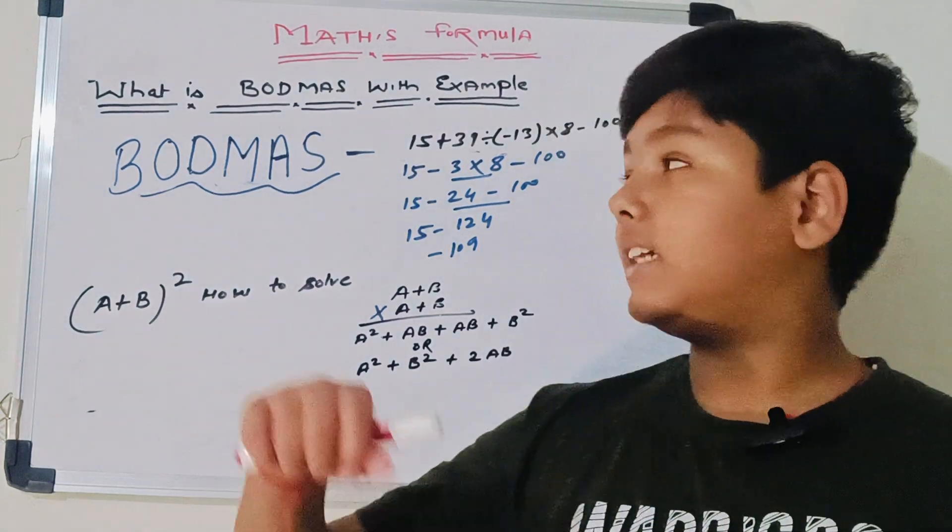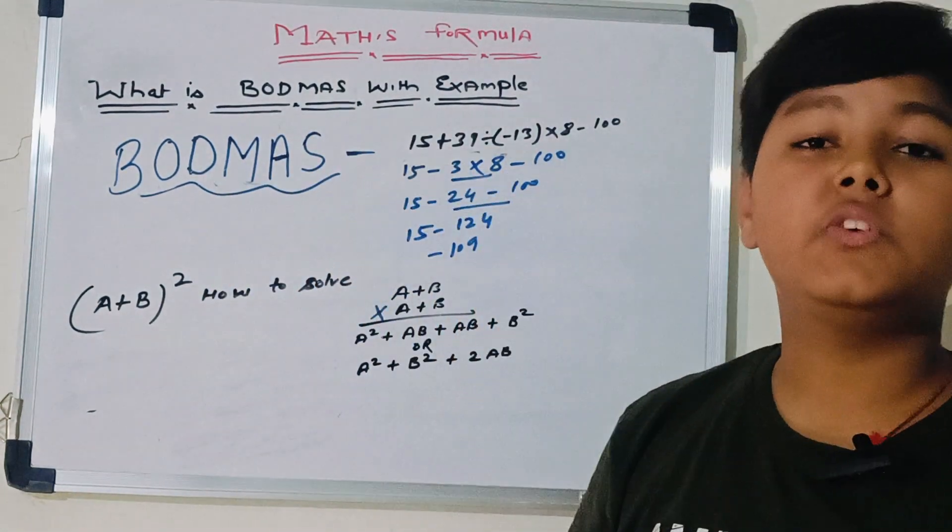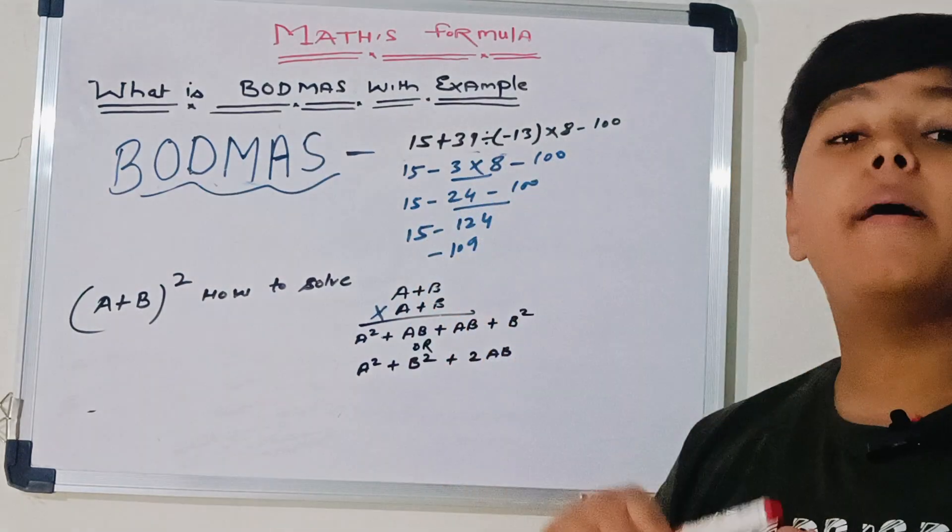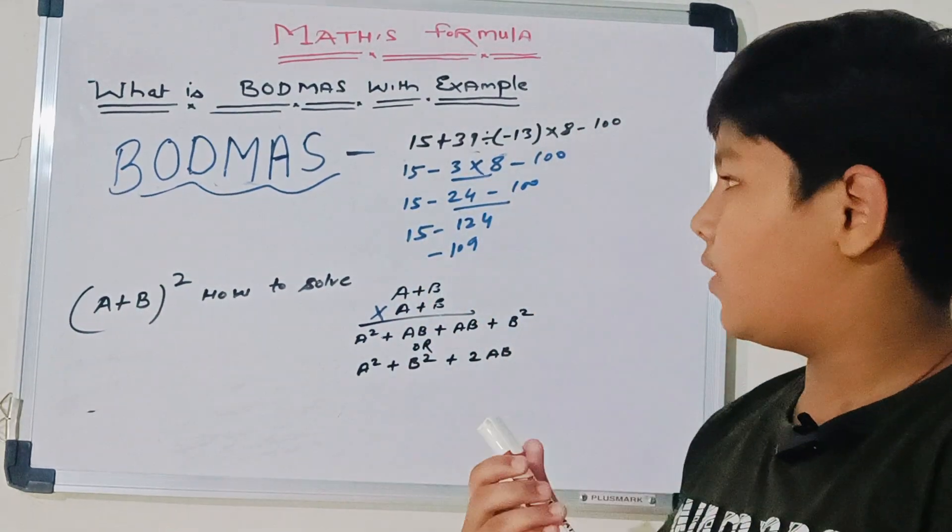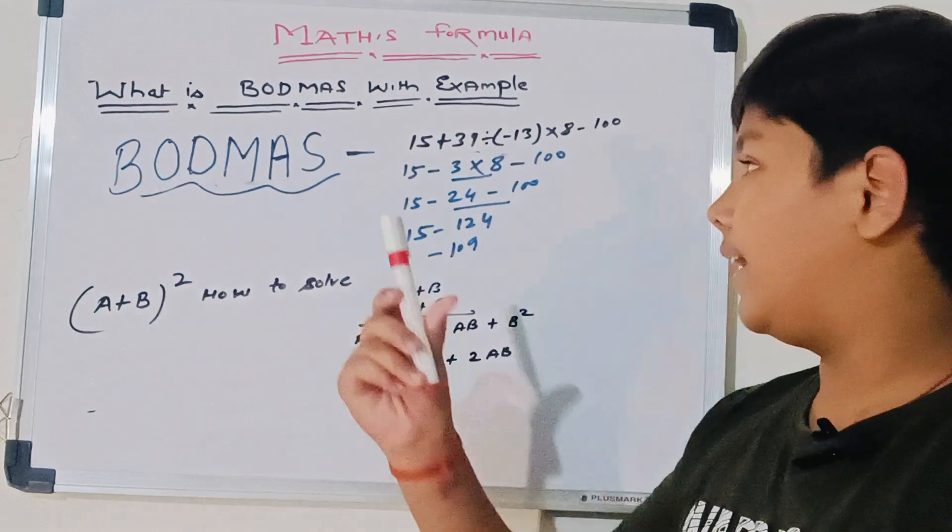Let's take an example. So the example is 15 plus 39 divided by minus 13 multiplied by 8 minus 100. So let's start solving.